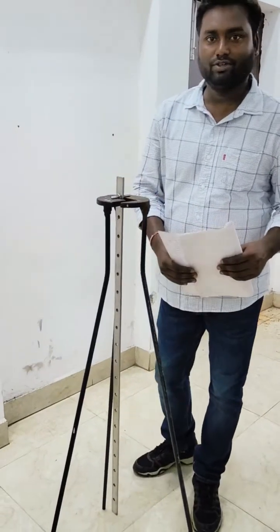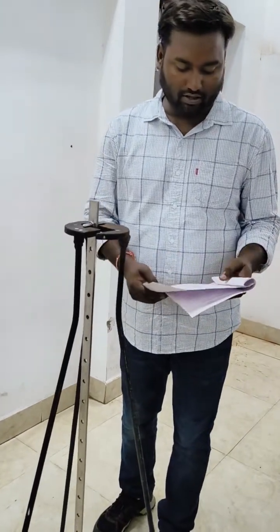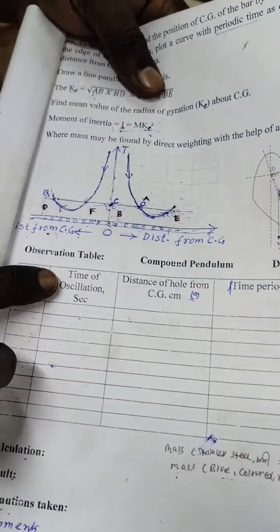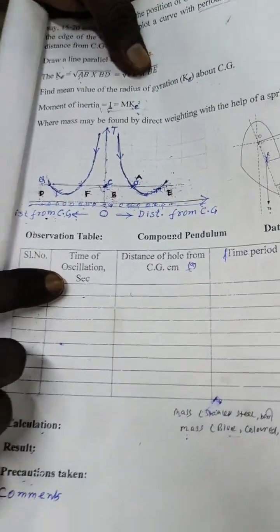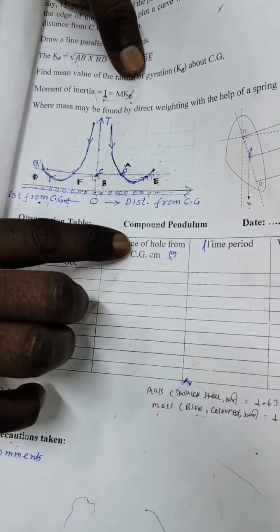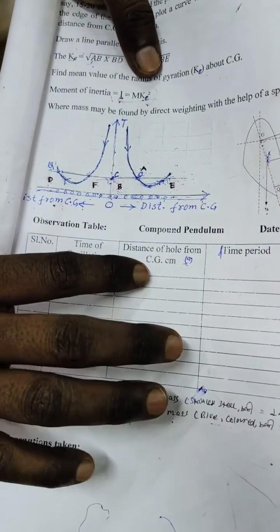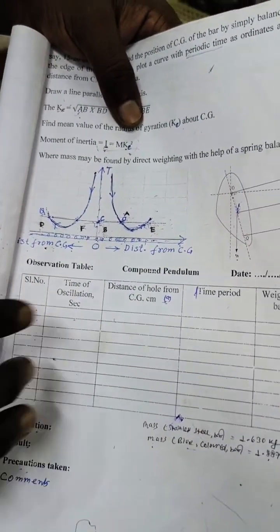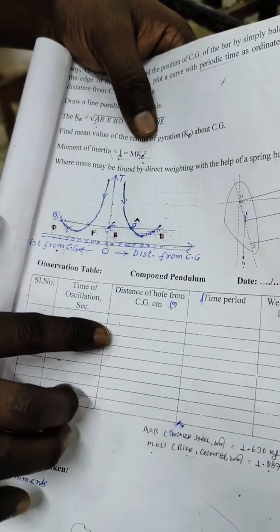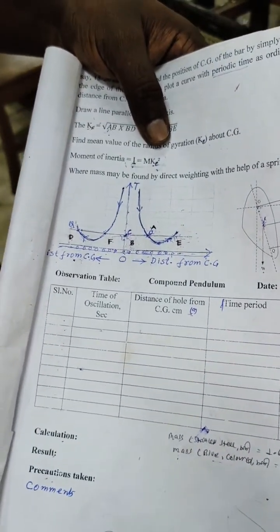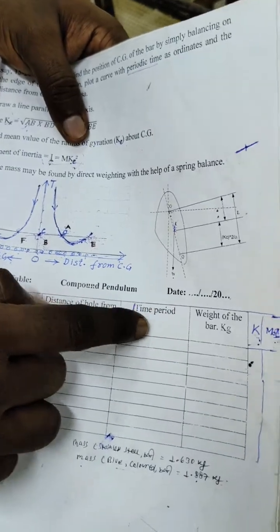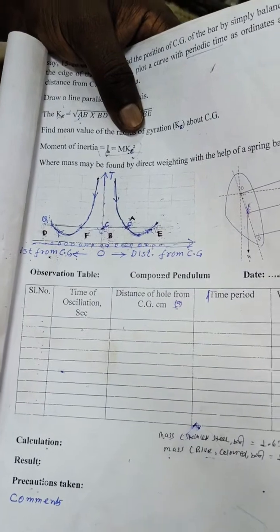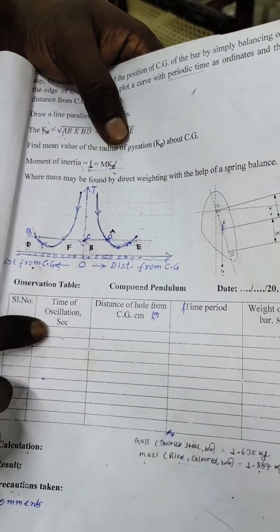I will take the observations for this experiment. As we can see in the table, there is time of oscillation to count, and the distance of the hole from the CG — that is, center of gravity. Here we have 19 holes in the bar and the CG lies at the 10th hole. We have to measure the distance of each hole with respect to the 10th hole, and then calculate the time period, considering 10 oscillations.